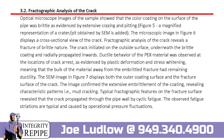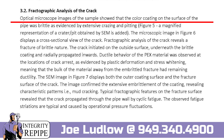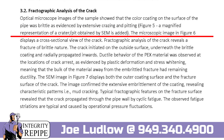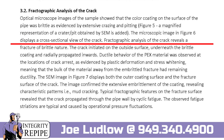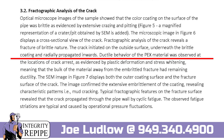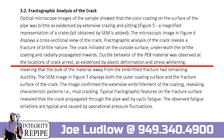Optical microscope images of the sample showed that the color coating on the surface of the pipe was brittle, as evidenced by extensive crazing and pitting. A magnified representation of a crater or pit obtained by SEM is added. The microscopic image in figure six displays a cross-sectional view of the crack. Fractographic analysis reveals a fracture of brittle nature; the crack initiated on the outside surface underneath the brittle coating and radially propagated inward.